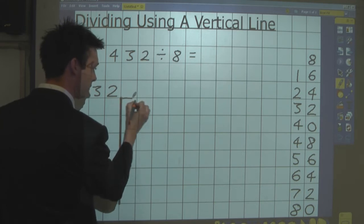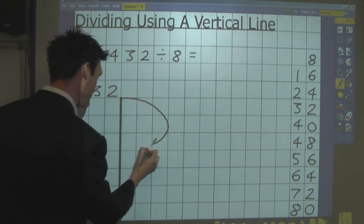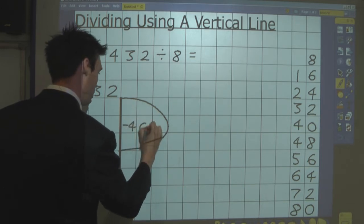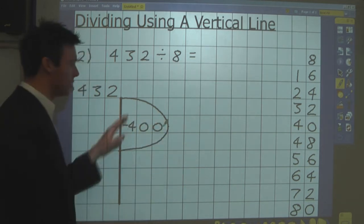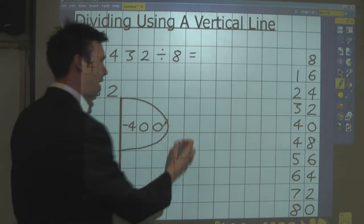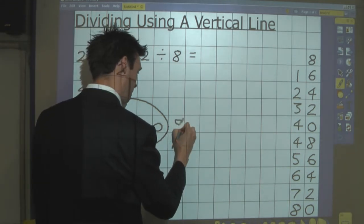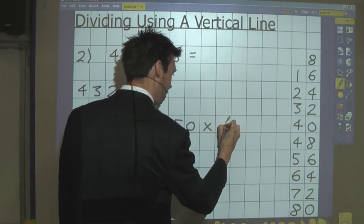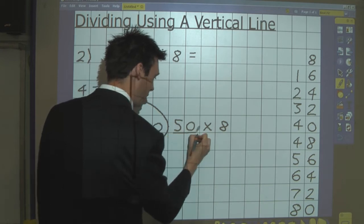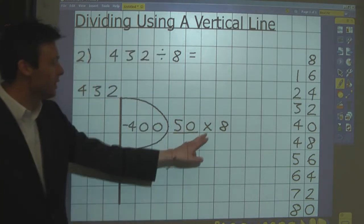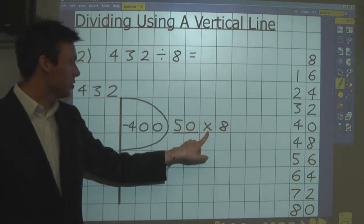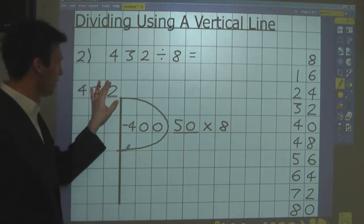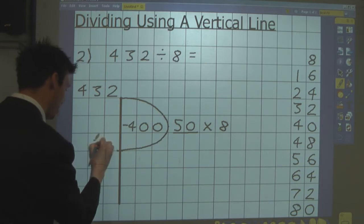So I draw my bubble, and I'm going to take away 400. I'm writing in the bubble the amount I'm taking away, and that equates to 50 lots of 8. Again, I'm underlining the lots of amount. Instead of writing lots of, I can use the multiplication symbol. 432 take away 400 leaves me with 32.